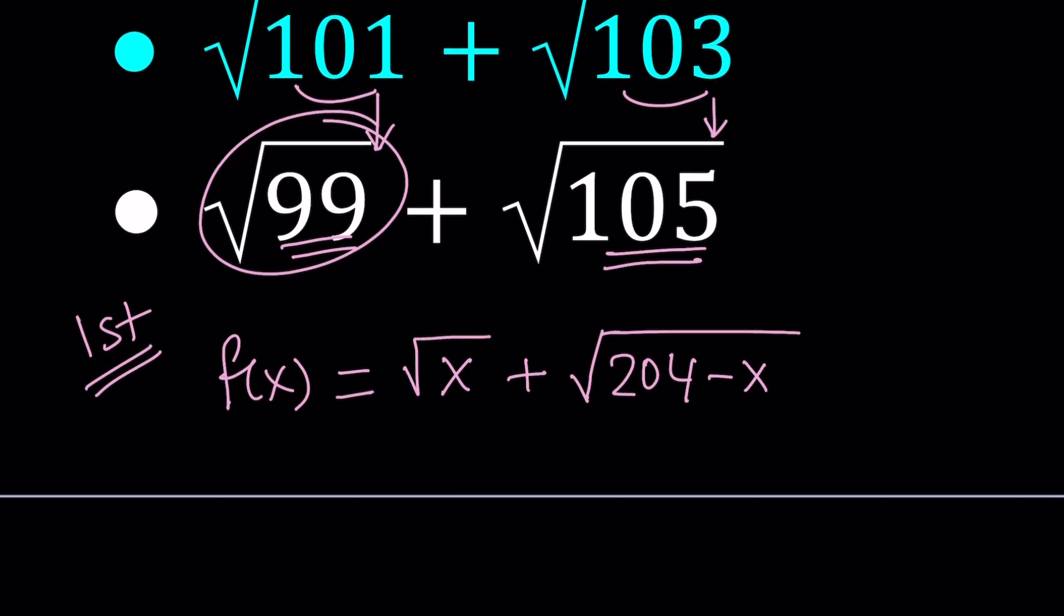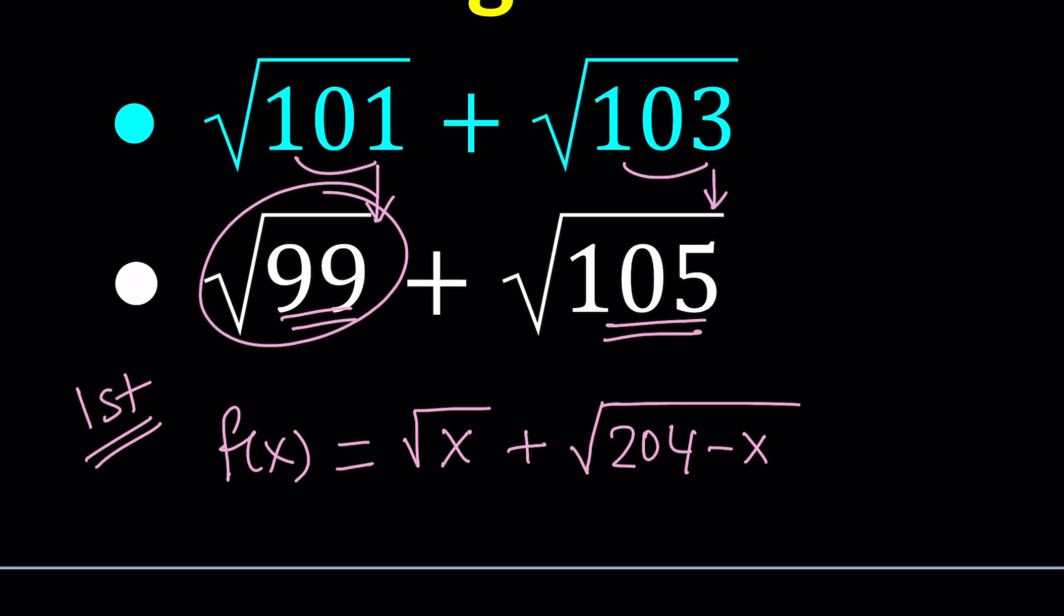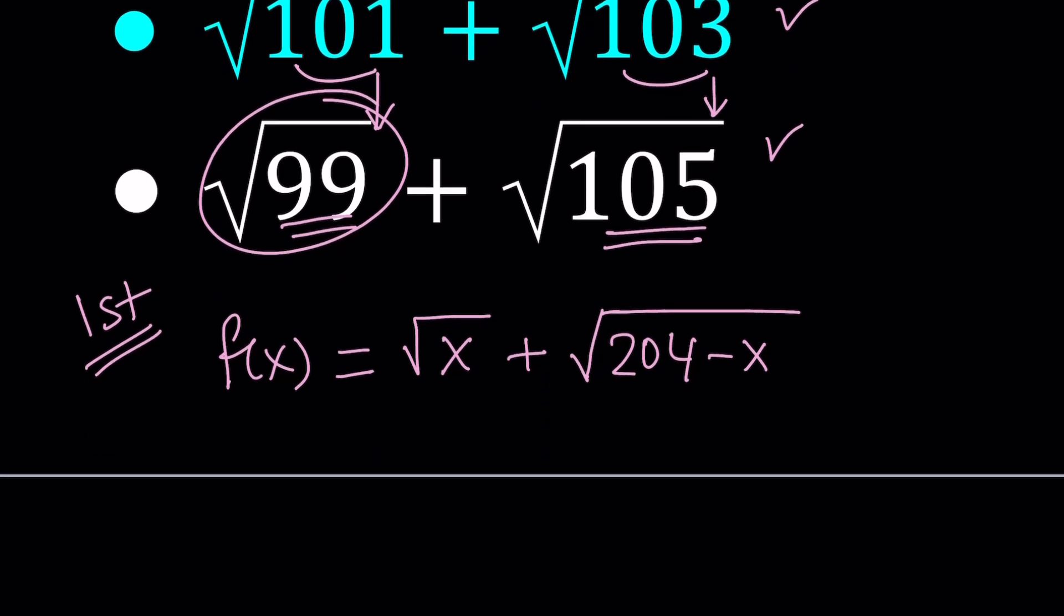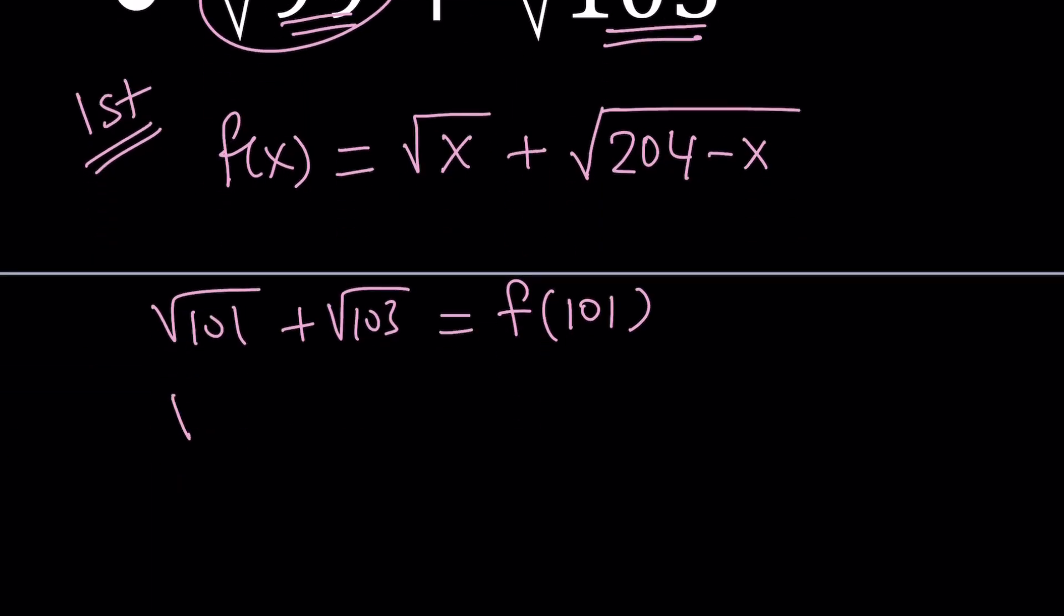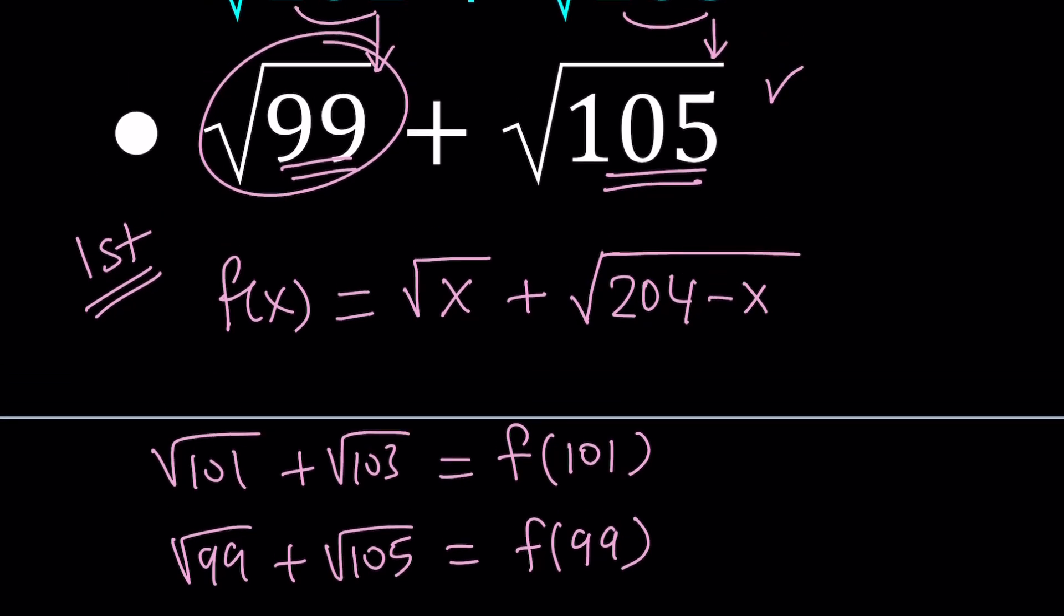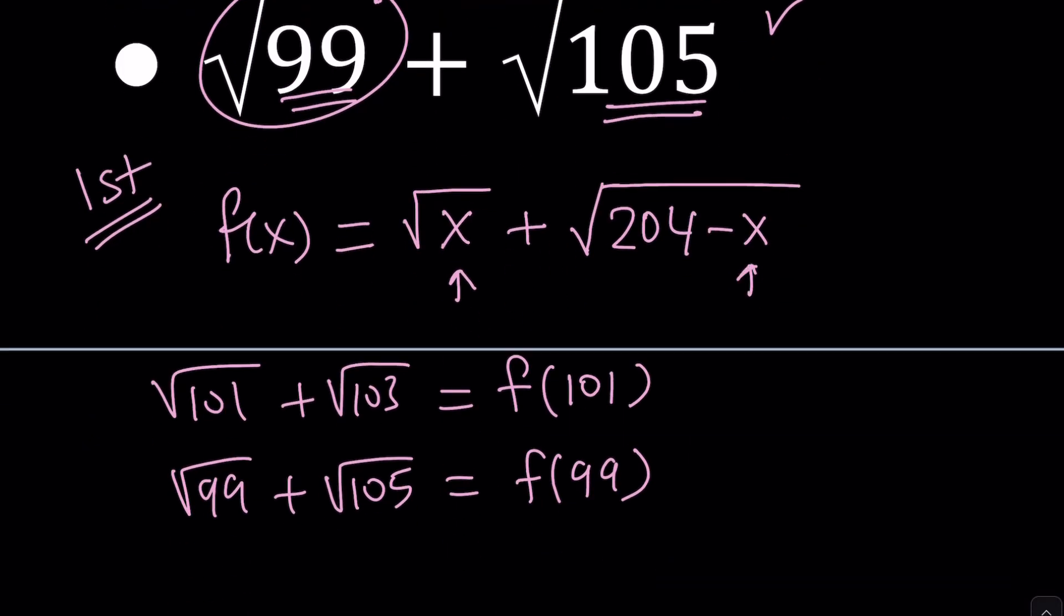If f(x) is defined as such, then we can think of these two values as points on the graph of this function. For example, square root of 101 plus the square root of 103 would be f at 101. Because if you replace x with 101, that's what you're going to get. And the same thing for the second one. The second number can be written as f of 99.